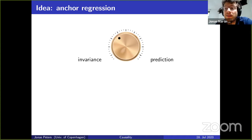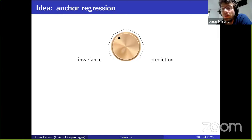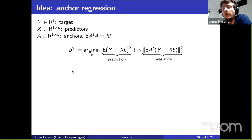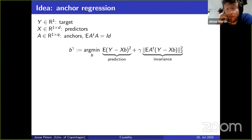This may be too conservative — not what we would expect in practice. If you're trying to find methods that perform well under distributional shifts, the interventions might not be arbitrarily strong. The idea is that by trading off invariance and predictability you may find interesting models. We call this anchor regression — finding the trade-off between invariance with respect to an anchor and predictive power. You can look at anchor regression just to see how this could look formalized.